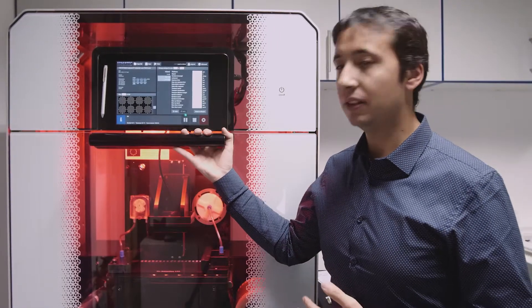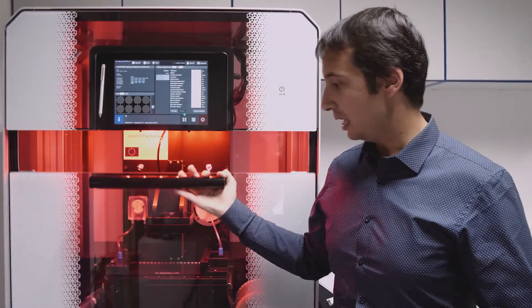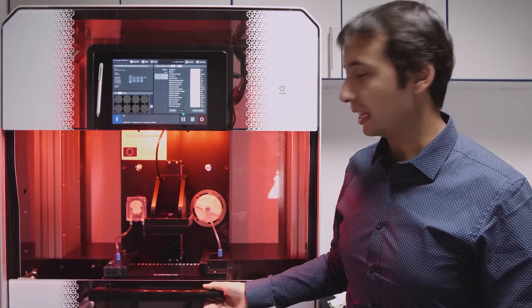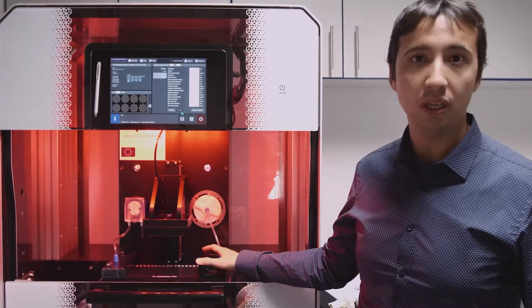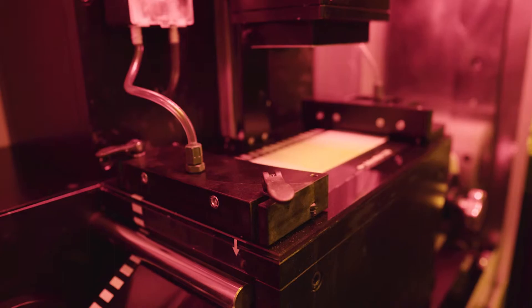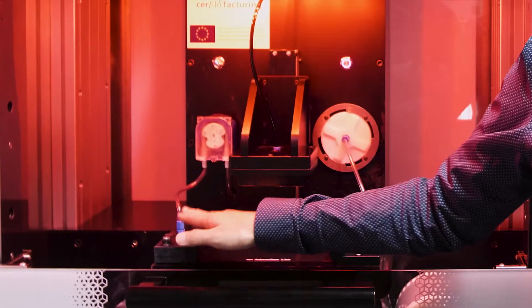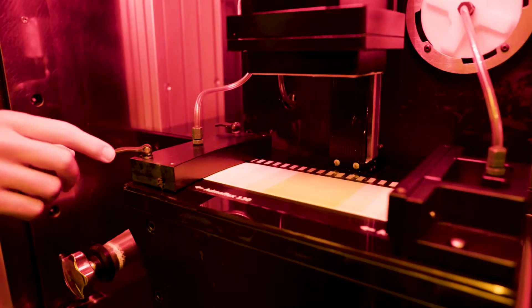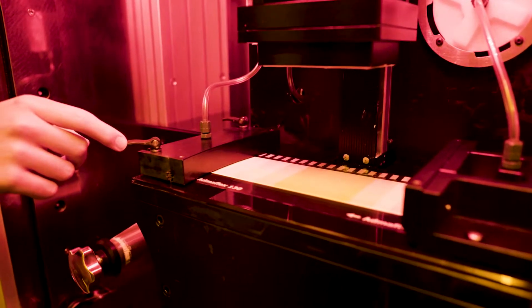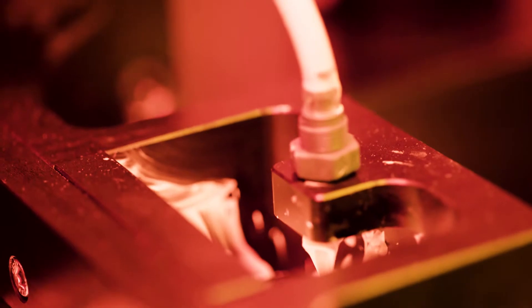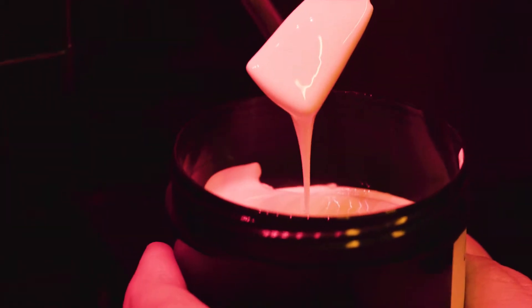In the machine that we're presenting for the Ceram Factoring project, we have a tape casting system where we can load a ceramic resin that is transported to a printing area, and then the material that is not used for the printing is collected on a wiper construction and is pumped and reconditioned back, ready to print the next layer.